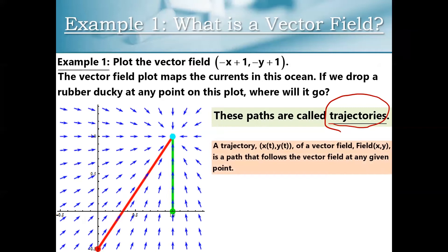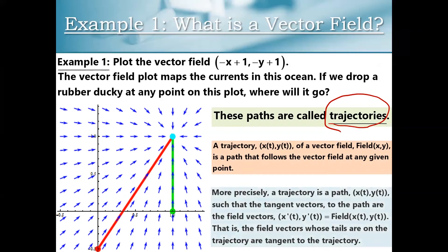You want a nice definition of a trajectory in this course. A trajectory x of t comma y of t of a vector field F of x comma y is a path that follows the vector field at any given point. More precisely — and this is the part you really want in your notes — a trajectory x of t, y of t has the property that its tangent vectors are the field vectors. The field vectors whose tails are on the trajectory are tangent to the trajectory.